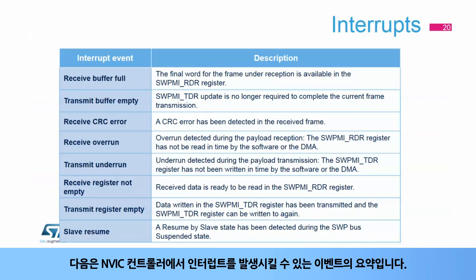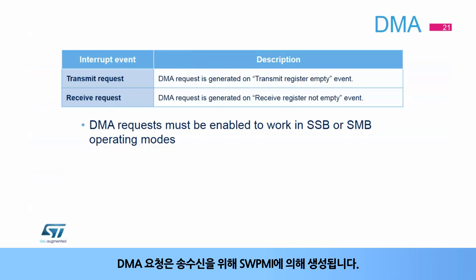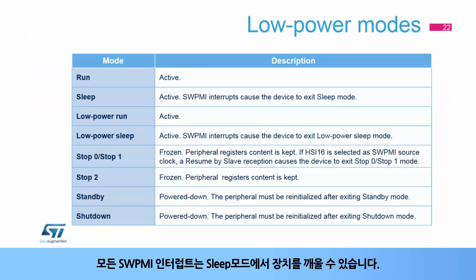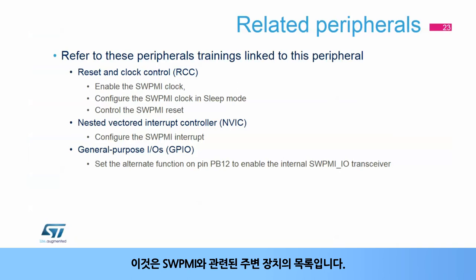Here is a summary of the events able to trigger an interrupt in the NVIC controller: transmit and receive buffers, transmit and receive registers, errors (CRC, overrun, and underrun), and resume by slave. DMA requests are generated by the SWPMI for transmission and reception, and must be enabled when working in SSB and SMB modes. All SWPMI interrupts can wake up the device from sleep mode. If the device is put in stop mode, only a resume-by-slave event can wake up the device. Please refer to the related peripheral trainings for more information.